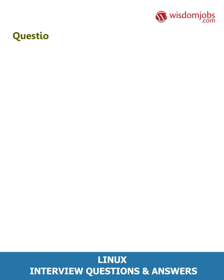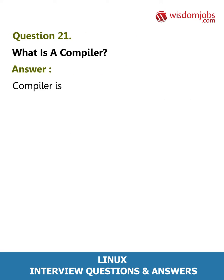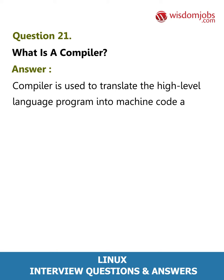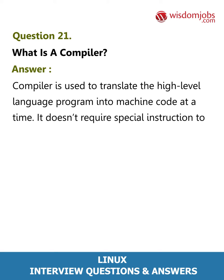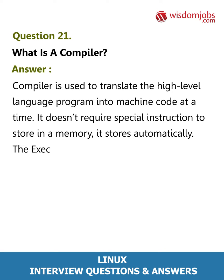Question 21: What is a compiler? Answer: A compiler is used to translate a high-level language program into machine code all at once. It doesn't require special instructions to store in memory — it stores automatically. The execution time is less compared to an interpreter.